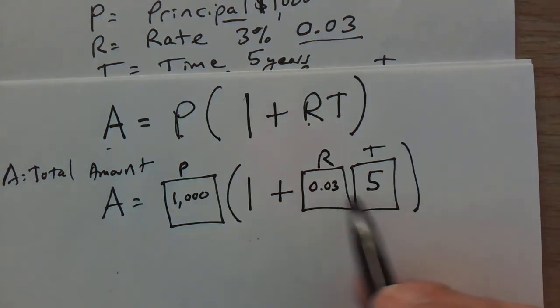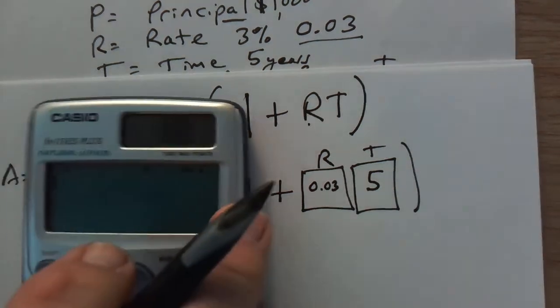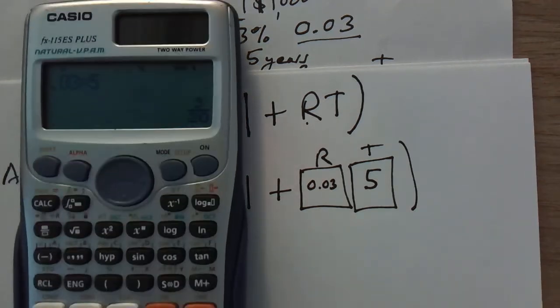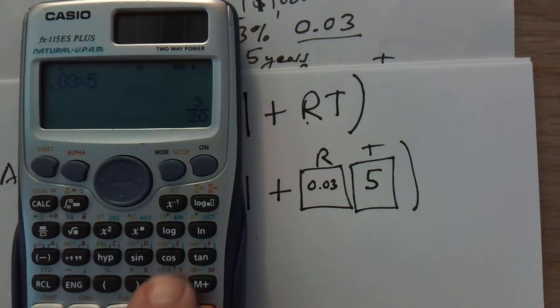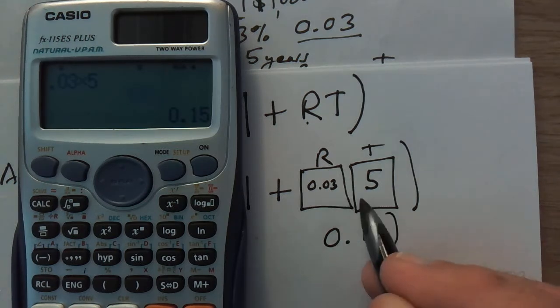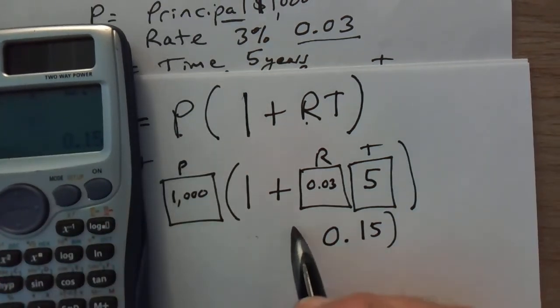So we're going to multiply first - 0.03 times 5. I'm going to use my handy calculator for that - 0.03 times 5 equals - and my calculator gives it as a fraction but you can easily hit this button right here and it changes it to a decimal. So 0.15 is what I get when I multiply 0.03 by 5.